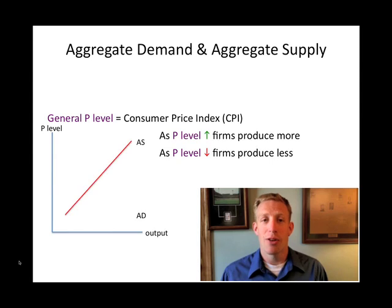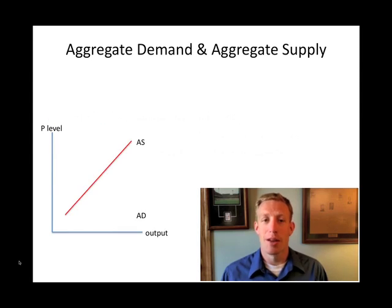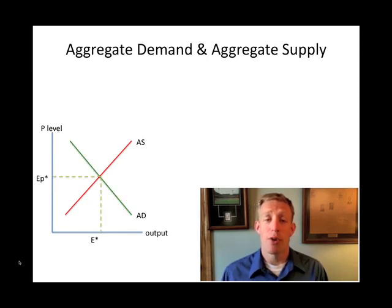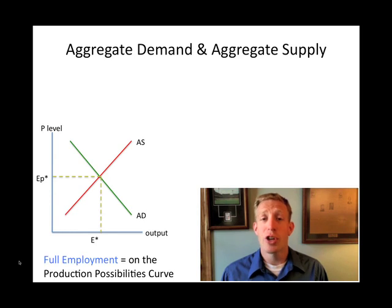When we put these two things together, we find an equilibrium in the macro economy where the two lines intersect. The question is whether or not that equilibrium is what we want for our economy. One thing that we look for at the macro level is a point called the full employment level. At full employment, we are producing essentially on the production possibilities curve — using our resources efficiently to produce as much as we can. We have some unemployment at the margin as people try to find new jobs or switch back and forth.